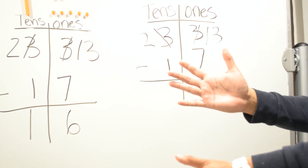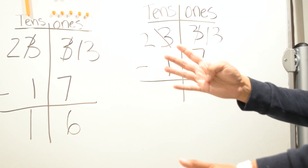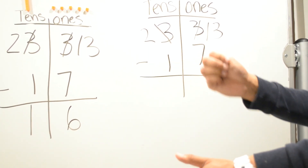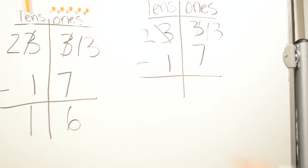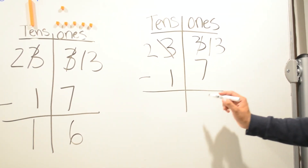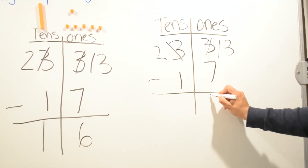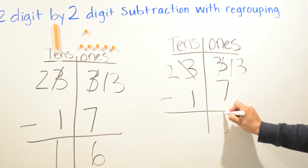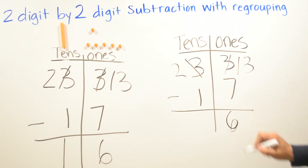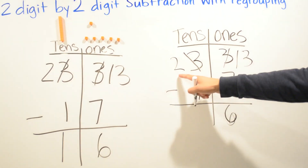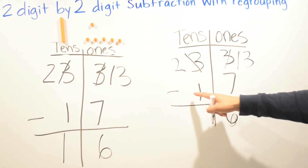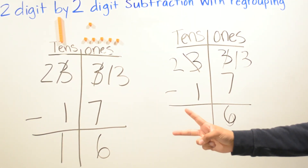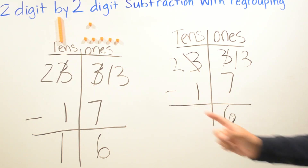Then we count how many fingers we have: one, two, three, four, five, six — that's six. And now we have two minus one, so two minus one gives us one.